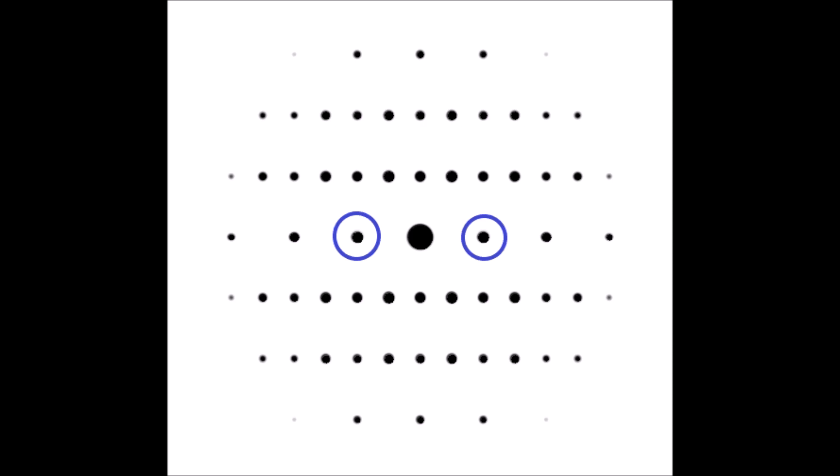So in the schematic I have here, you can see I have two spots circled. I have a Bragg spot and its opposite. You could take the right one to be the spot and the left to be its opposite or vice versa, it doesn't matter.